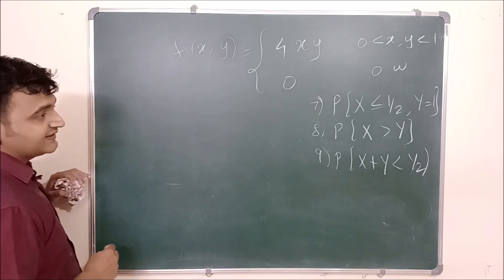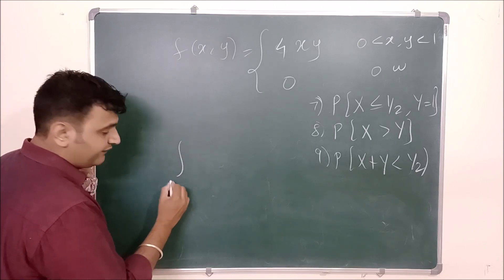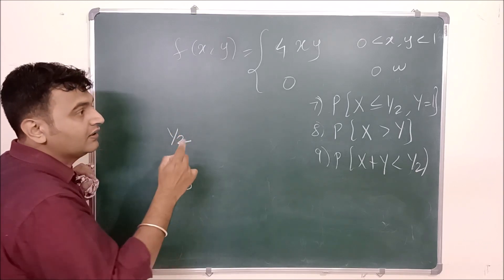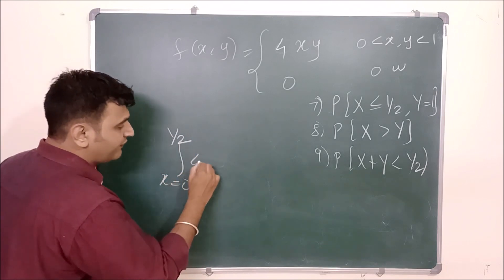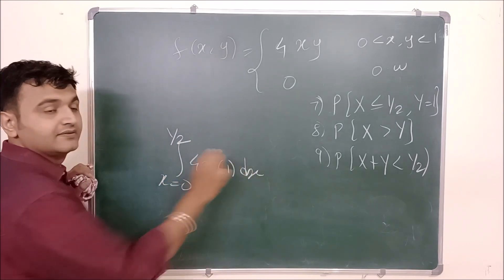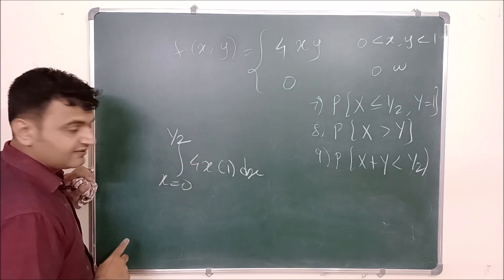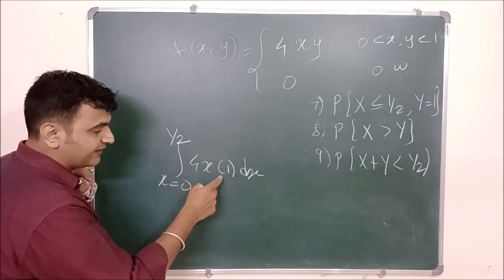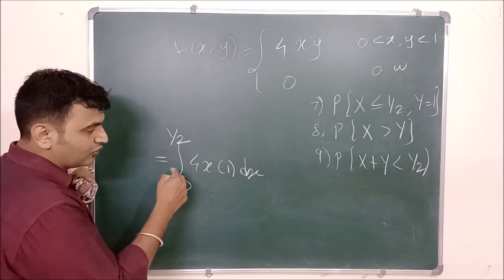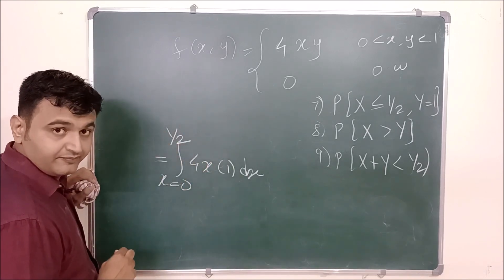The seventh question: probability that X ≤ 1/2. Your x goes from 0 to 1/2 and y goes from 0 to 1, and the integrand is 4xy. So this is essentially a CDF-type question, except y is integrated fully from 0 to 1. Solving gives the answer for the seventh question.